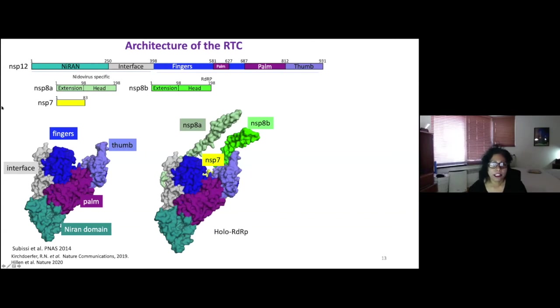So the co-factors that I spoke about earlier are NSP8. There are two copies of NSP8 that bind to the holo RDRP and one NSP7. And these two references here, Subissi and Kirchdorfer, basically showed that they bind to make a good stable complex of holo RDRP. And Subissi showed that they were important for transcription and processivity.